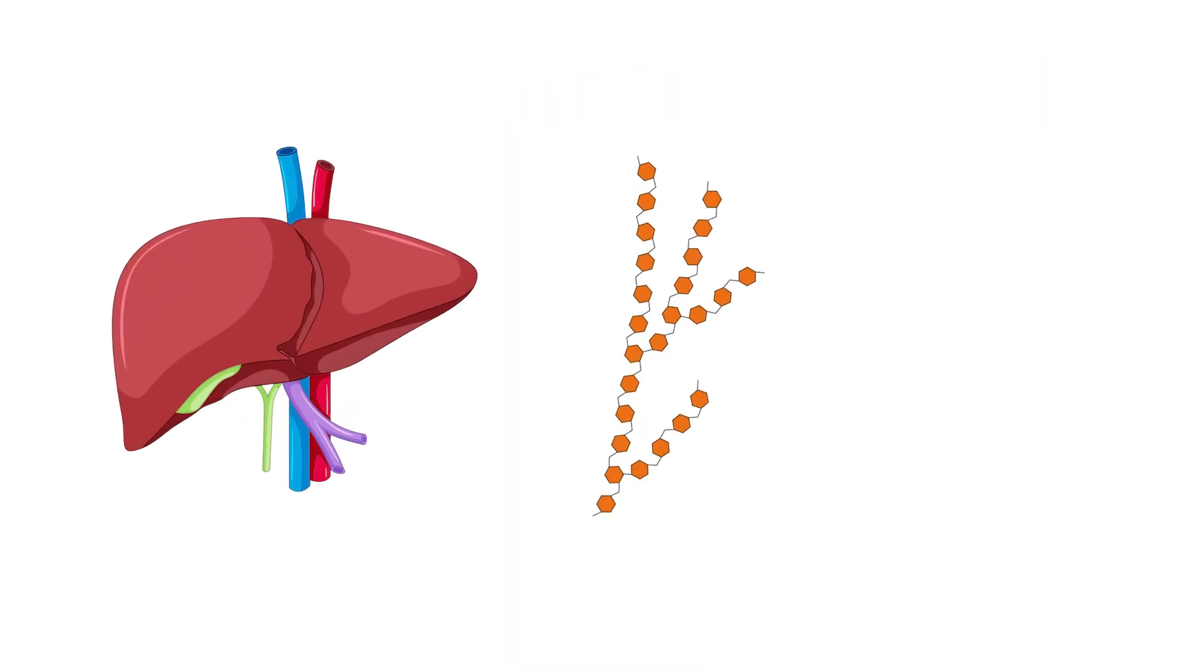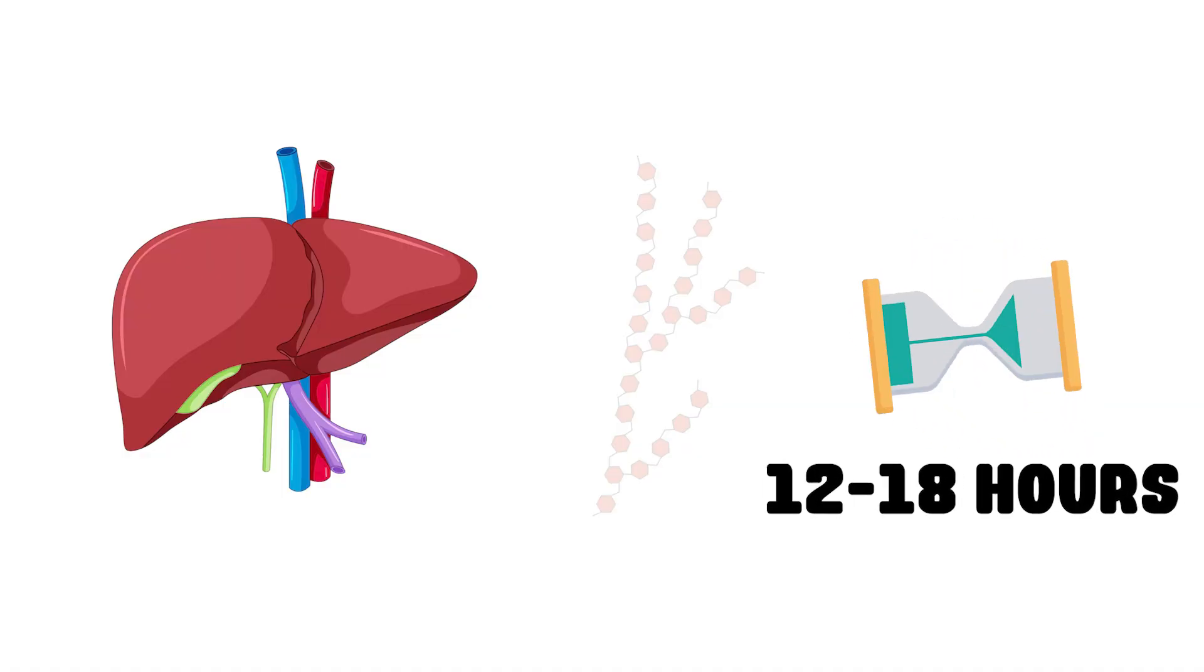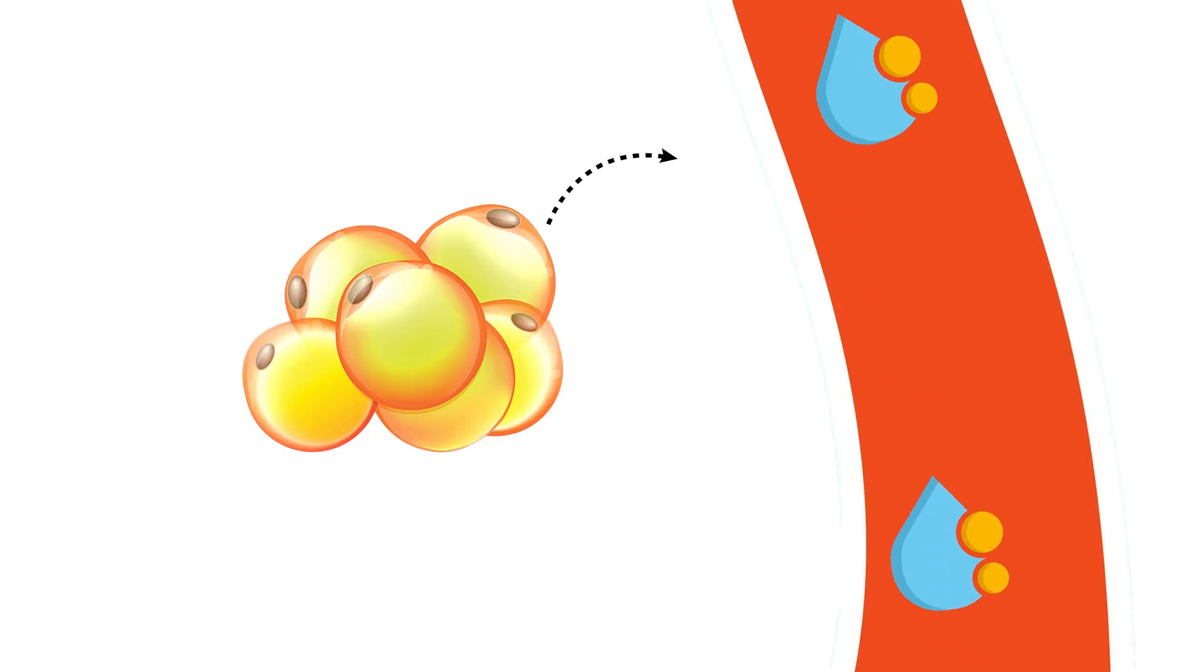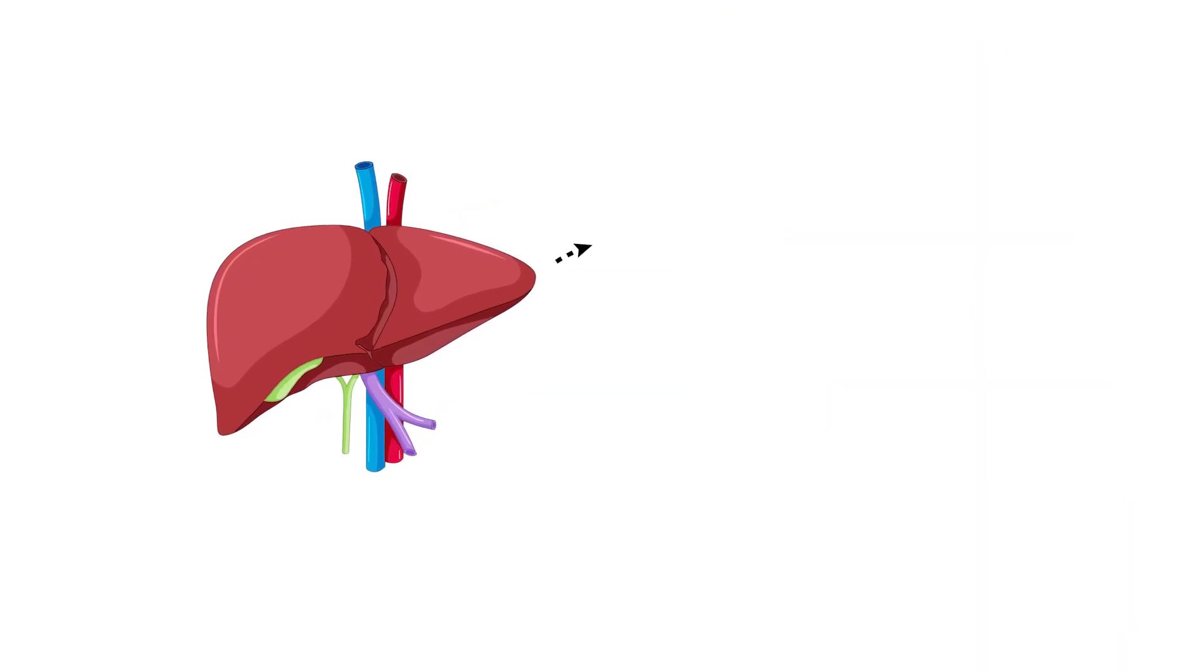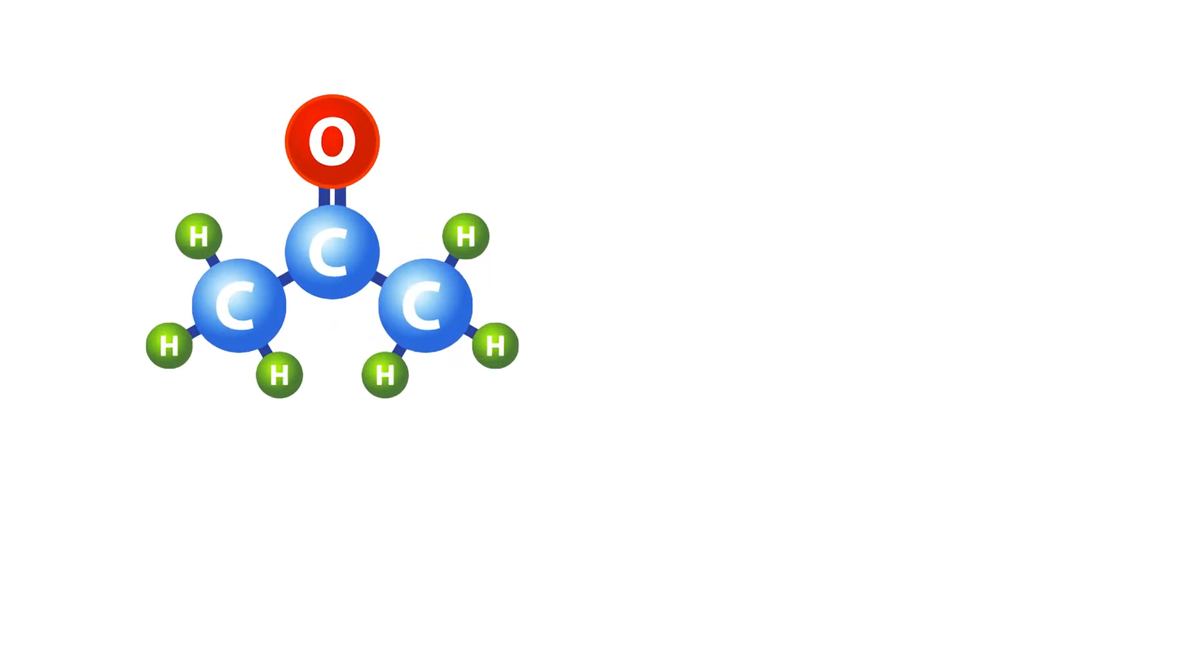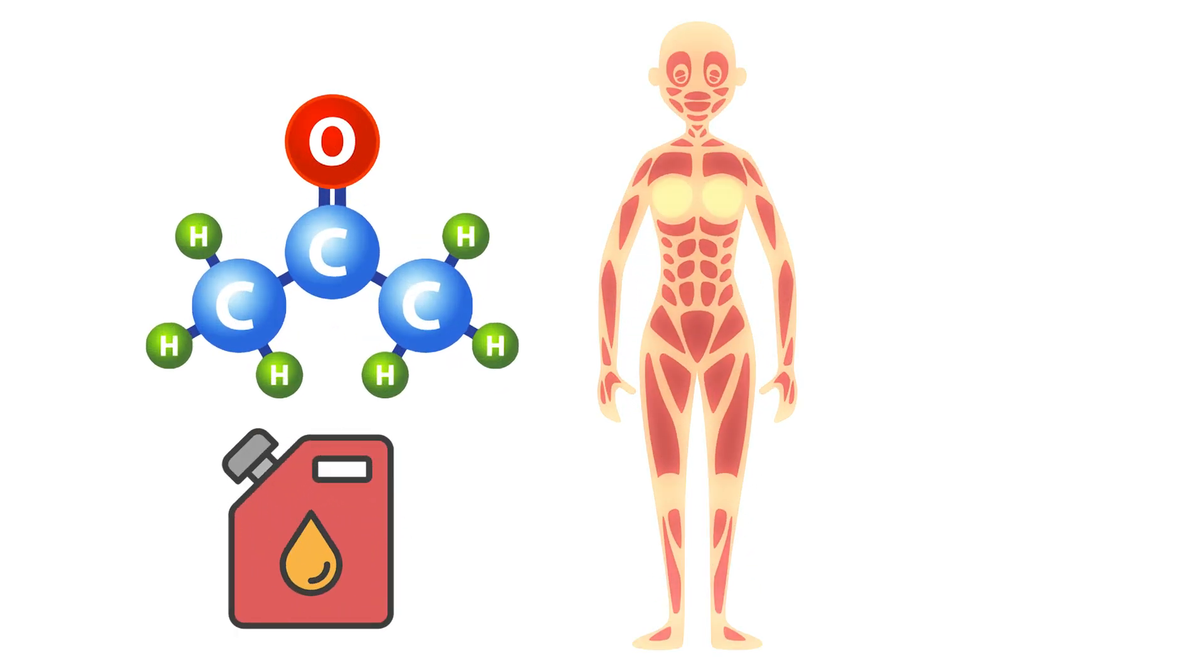Once your liver's glycogen supply runs dry, usually somewhere between 12 and 18 hours into a fast, your fat cells get a signal to release stored fatty acids into the bloodstream. The liver picks them up and turns them into molecules called ketones, and those ketones become the replacement fuel for almost every cell in your body, including your brain.